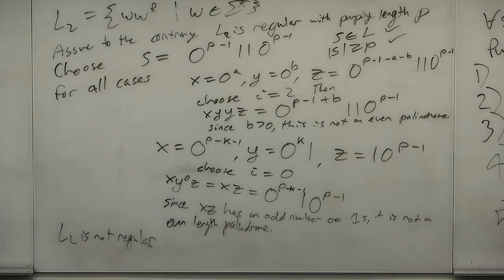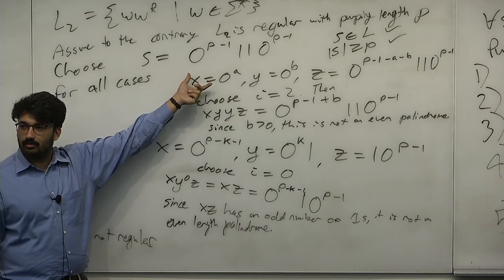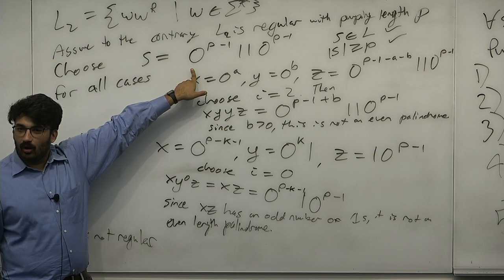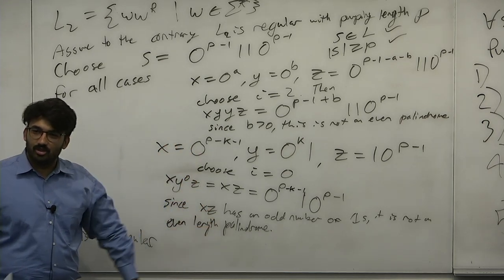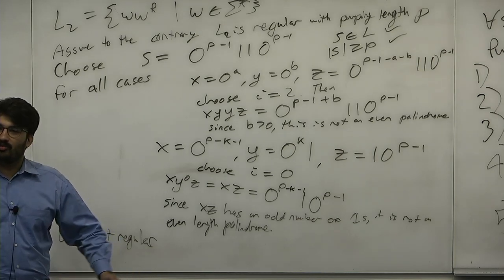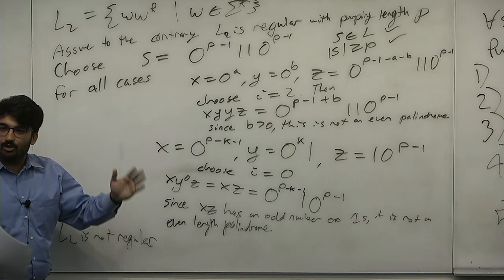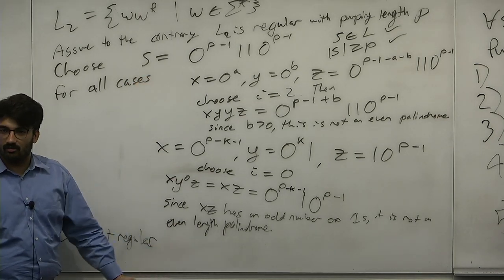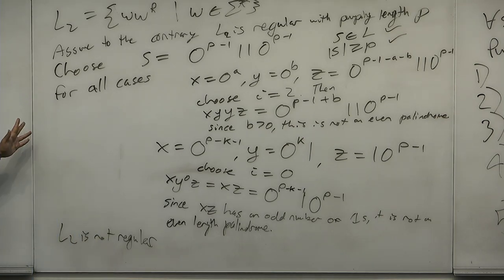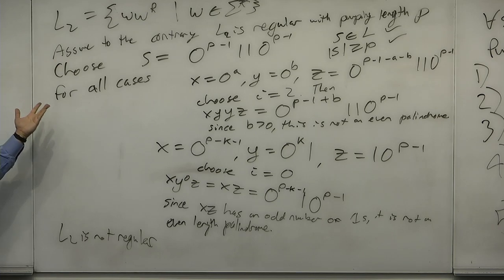Any questions on this proof? I chose a bad S on purpose here. When you choose a good S, you usually want the first block to be all the same symbol so you only have one case. I chose 0^(P−1) specifically to create two cases. If I'd chosen 0^P 1 1 0^P, I wouldn't have needed to explain the second case. Choosing a good S makes the rest of the proof really easy.